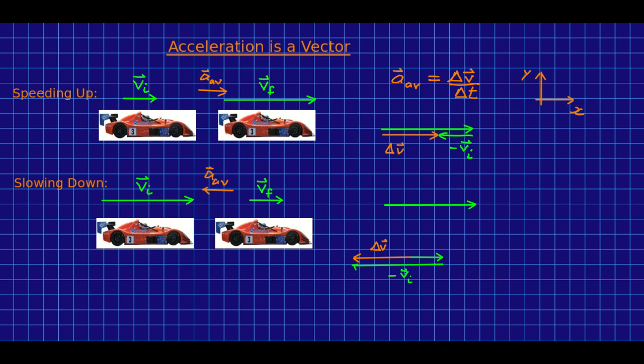then we would say for this car speeding up, its x component of acceleration would be positive, whereas for this one slowing down, its x component of acceleration would be negative. But there's nothing sacred about speeding up being a positive component of acceleration versus slowing down being a negative.